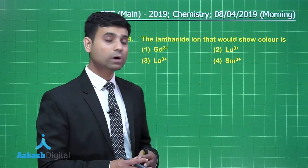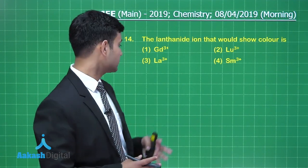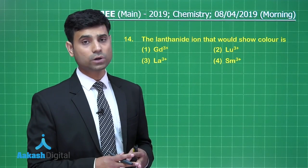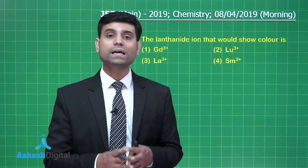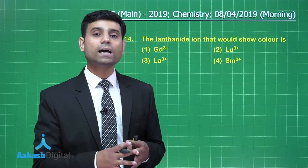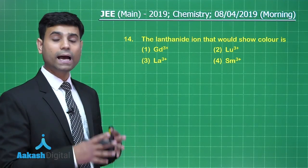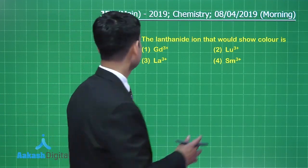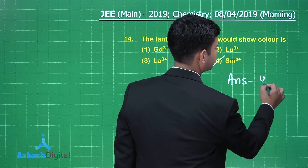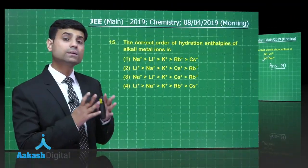The next question asks: which lanthanide iron would show color? Options are Gd³⁺, Lu³⁺, La³⁺, and Sm³⁺. Only Sm³⁺ has a 4f⁵ configuration; since it has unpaired electrons in the 4f subshell, it will show f-f transitions and thus exhibit color. The correct answer is option 4.